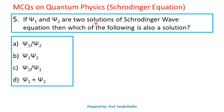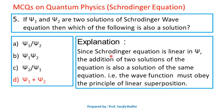Question number 5. If psi1 and psi2 are two solutions of Schrödinger's wave equation, then which of the following is also a solution? Options are psi1/psi2, psi1×psi2, psi2/psi1, or psi1+psi2. Since Schrödinger's equation is linear in psi, the addition of two solutions is also a solution — the wave function must obey the principle of linear superposition. So psi1 plus psi2 is also a solution. Option D is correct.